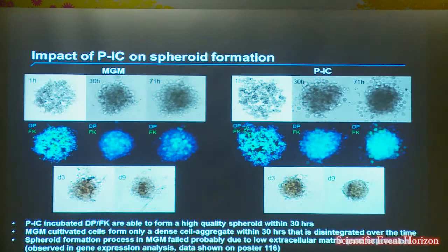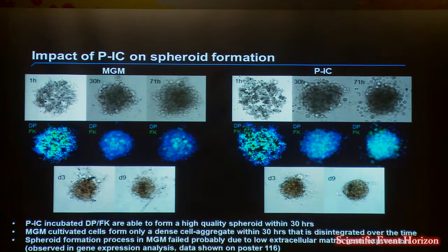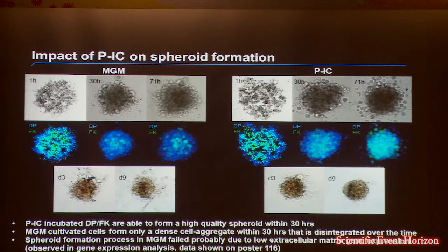To further use our MGM-PIC model, we cultivated cells in PIC and could observe a nice spheroid that is stable over a period of time. Whereas if we cultured the cells in MGM, we could observe only a dense cell aggregate that disintegrated over time. The spheroid formation in MGM failed, probably due to low extracellular matrix gene expression, which was observed by gene analysis and is shown in another poster at this Congress.